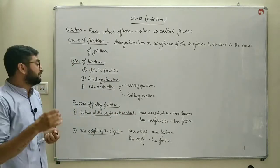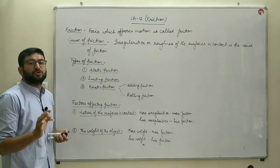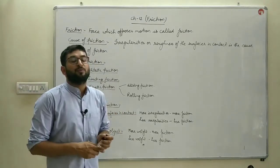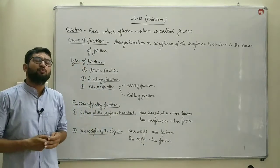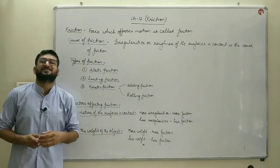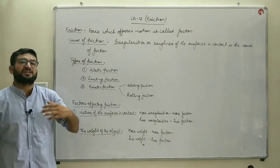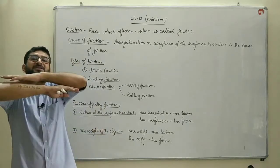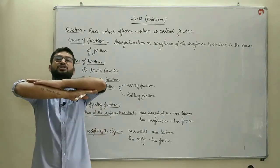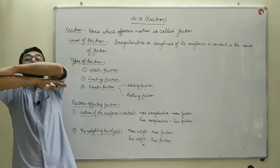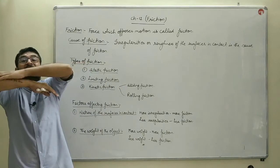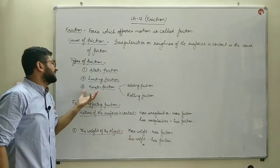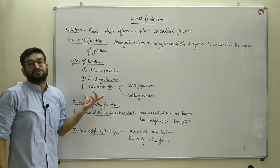The third type is kinetic friction — the frictional force which comes into play when one object moves over the surface of another. When two objects are in direct contact and one is moving over the other, the frictional force is known as kinetic friction.